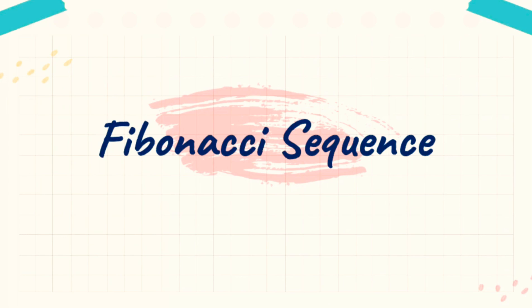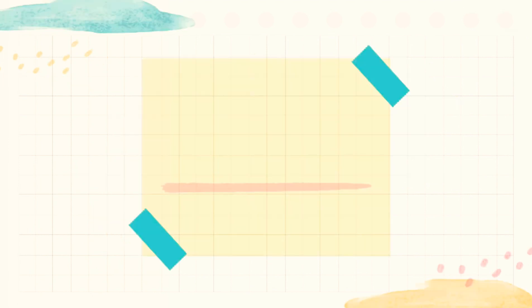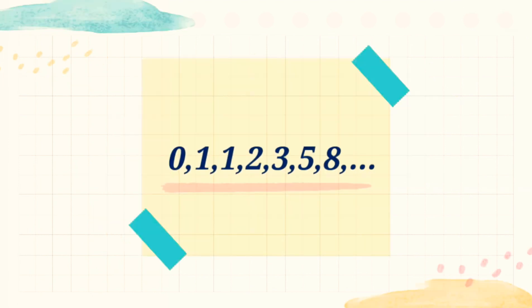Last is the Fibonacci sequence. The Fibonacci sequence is a sequence of numbers in which each element is obtained by adding the two preceding elements. The sequence starts with 0 and 1. So the Fibonacci sequence goes: 0, 1, 1, 2, 3, 5, 8, and so on.